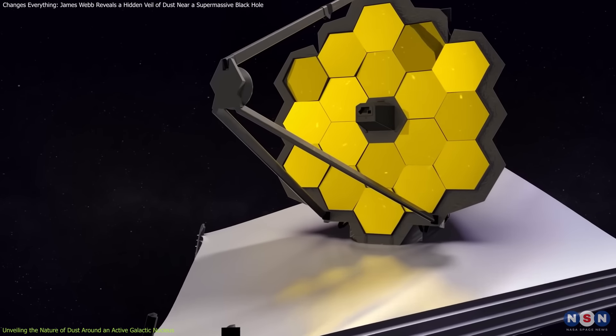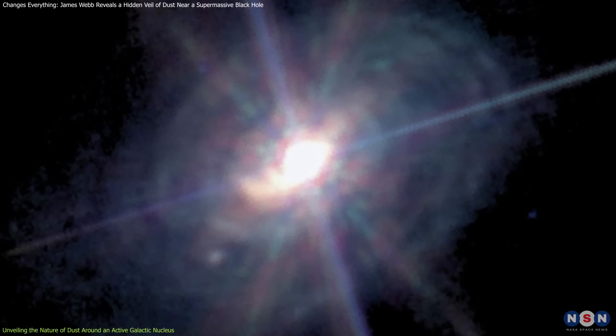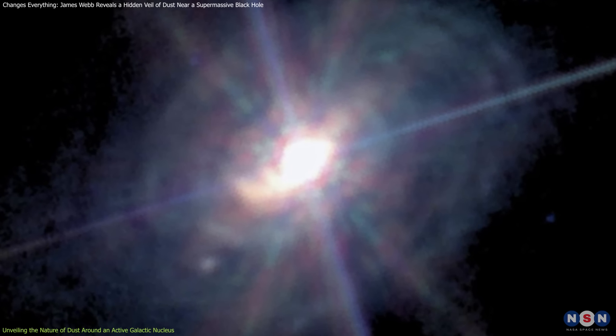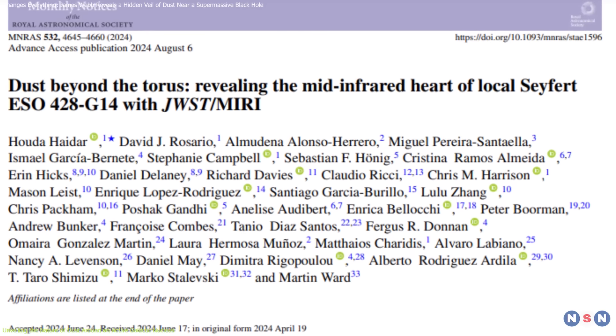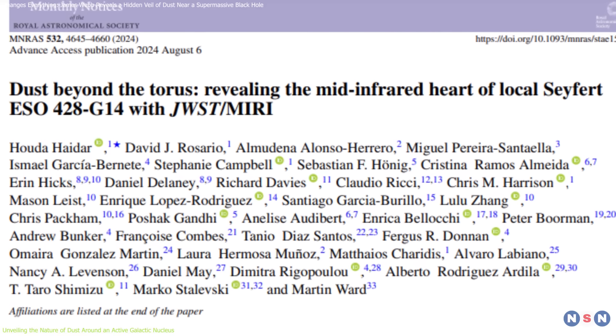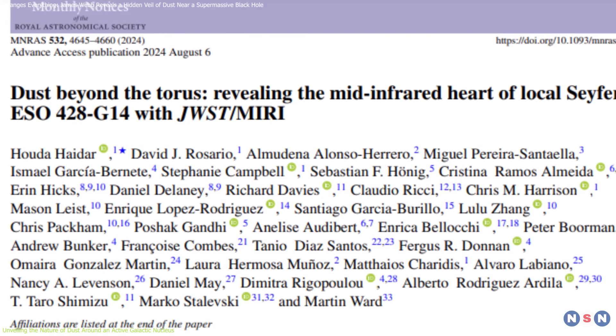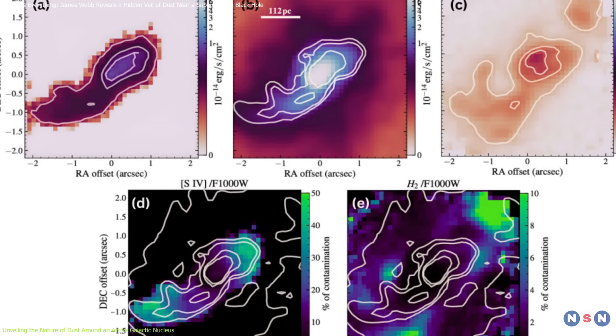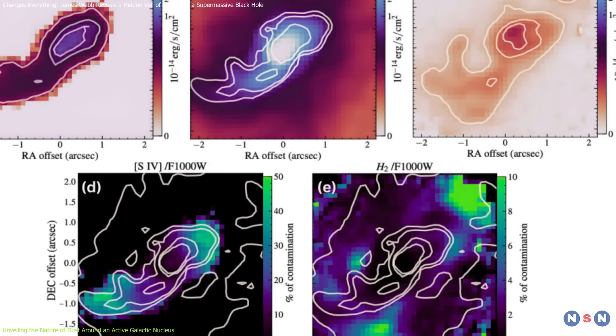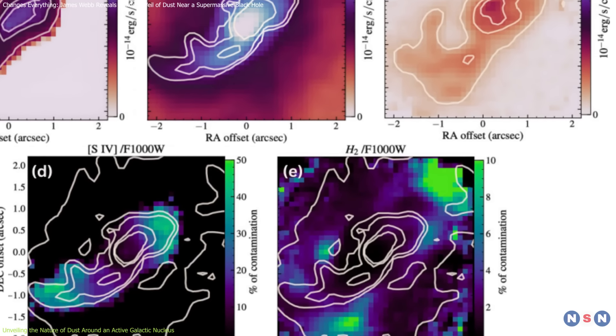Webb's advanced infrared sensitivity has allowed astronomers to observe it in unprecedented detail. The findings from Webb, which were published in the monthly notices of the Royal Astronomical Society, uncovered a fascinating structure of dust surrounding the supermassive black hole at the heart of this galaxy.